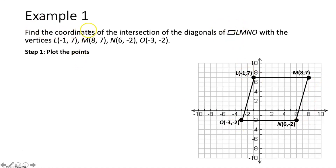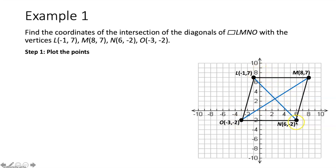Next we figure out the coordinates of the intersection of the diagonals. We know from the theorems that the diagonals of a parallelogram bisect each other, meaning this intersection point is the midpoint of segment MO and also the midpoint of segment LN. So all we have to do is find the midpoint of each diagonal.